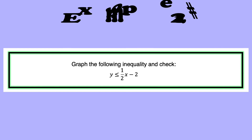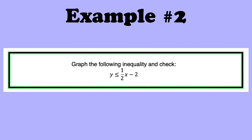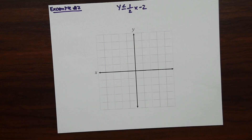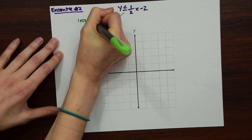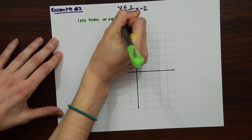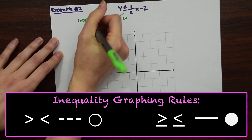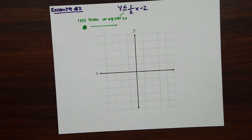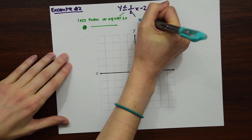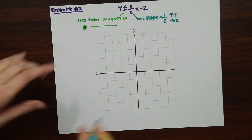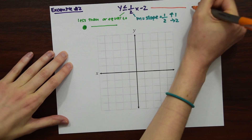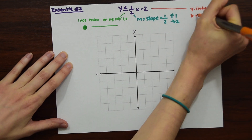For the next example we need to graph y is less than or equal to ½x minus 2. The first thing is to identify the inequality: this is less than or equal to, and notice the line under it — that means we use a closed circle and a solid straight line. The slope is m equals one half, so we go up 1 and to the right 2, and the y-intercept b is negative 2.